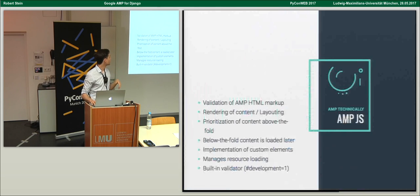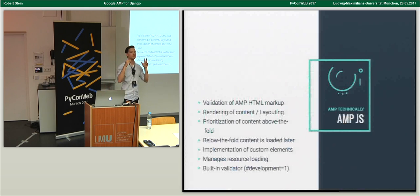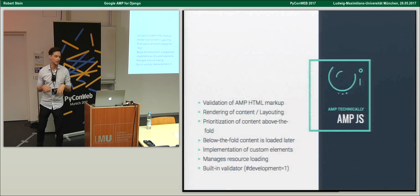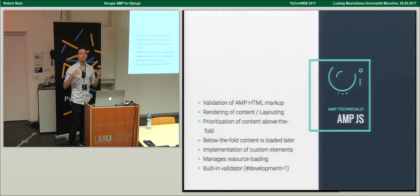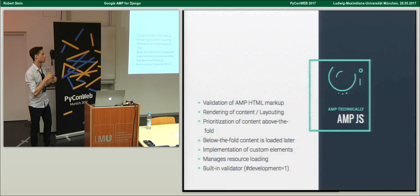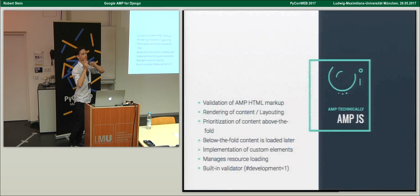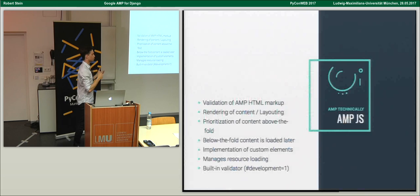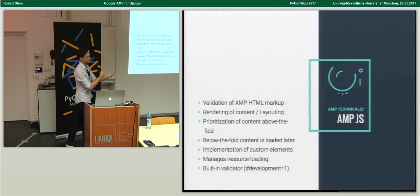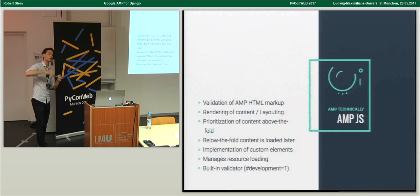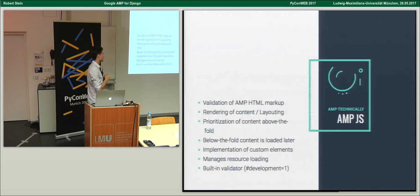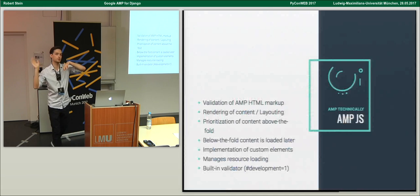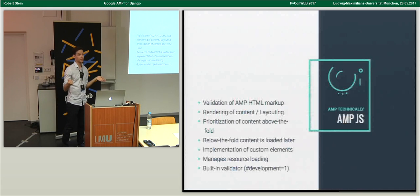The AMP JavaScript runtime validates your AMP HTML — if there's a mistake it won't validate. It pre-renders your page, so all your images and elements need a set width or height so the JavaScript can pre-calculate the page layout, avoiding layout jumps when images load later. It prioritizes above-the-fold content — what the user sees first is loaded and rendered first — and manages resource loading in the right order. It has a built-in validator: just append #development=1 to your URL and it shows all mistakes, or validates in the best case.